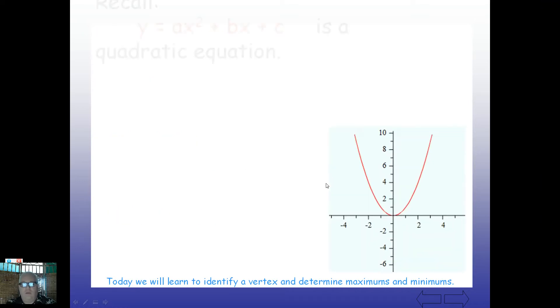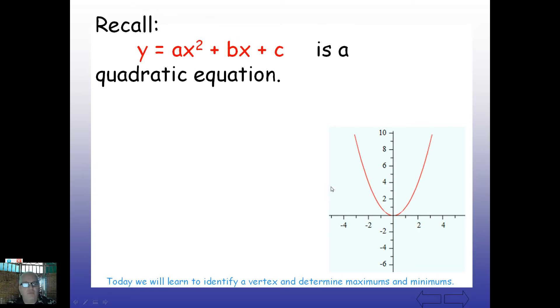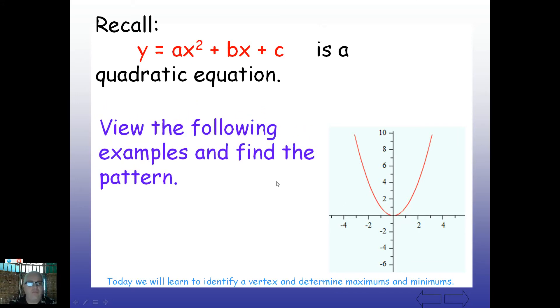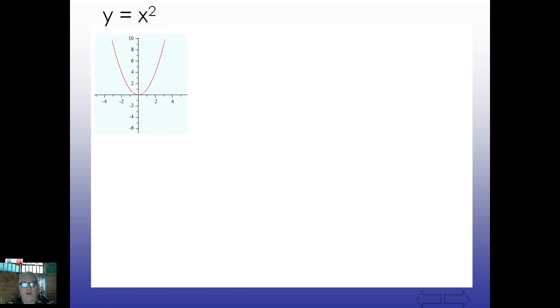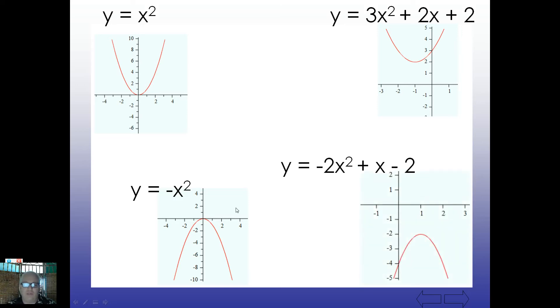Recall that y equals ax squared plus bx plus c is a quadratic equation. View the following examples and let's see if you can find a pattern. So just take a look at these and see what you find. Take a look here. y equals x squared. That was exactly how it would look and you saw that yesterday. Here's another one: y equals negative x squared. Here's one: y equals 3x squared plus 2x plus 2. We have a lot more stuff going on here, but there's the shape. And here's another one: y equals negative 2x squared plus x minus 2. So what do you notice about these equations and their corresponding images?